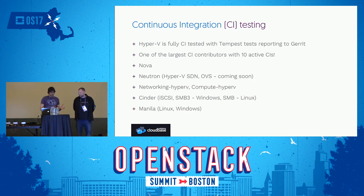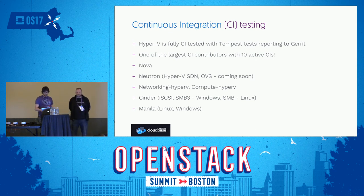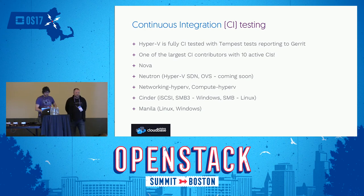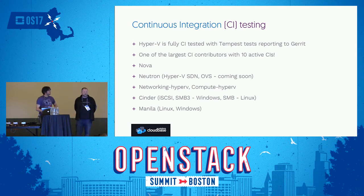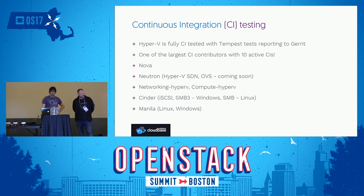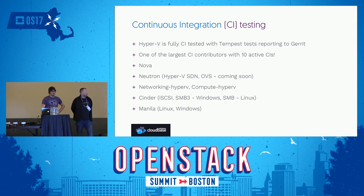We already talked about continuous integration. We have about 13 different drivers that we currently test in our CI today. We're constantly advancing that and adding new technologies. Our goal is to assure that Windows is a viable alternative to Linux in your OpenStack ecosystem, and the best way to do that is to be as well tested as everything else. I'd encourage you to look at StackAlytics under CloudBase Solutions CI bots and see how we compare to others — you're going to be extremely surprised.